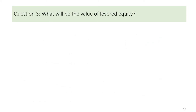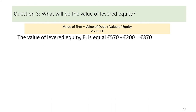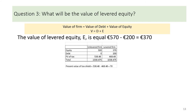Question 3: What will be the value of levered equity? Recalling from the pie concept, the value of firm is the summation of debt and equity. Since we have already calculated the value of the levered firm, we deduct the debt from the levered firm value to find levered equity — the answer is €370. The pie consists of value of equity, value of debt, and present value of tax discounted at cost of debt. The difference in present value of tax between the two firms is €70, which is the tax shield enjoyed by the levered firm. Levered firm pays lower taxes, so its value is higher.